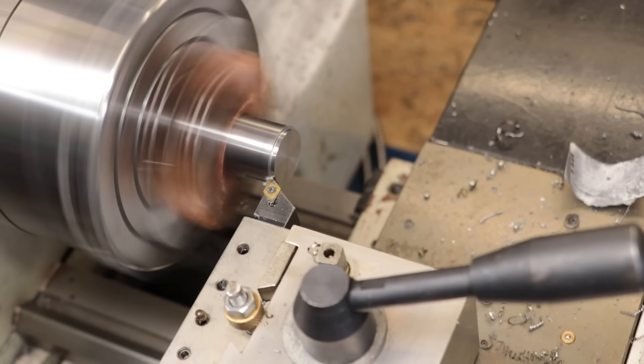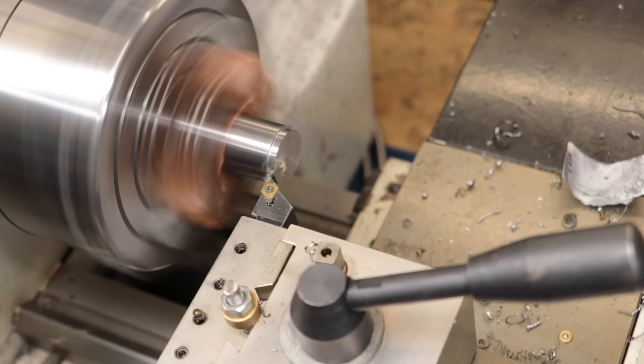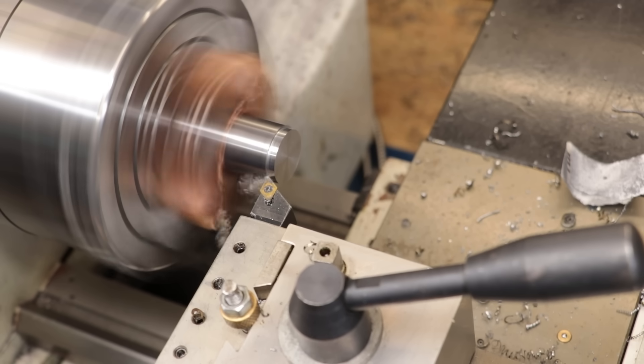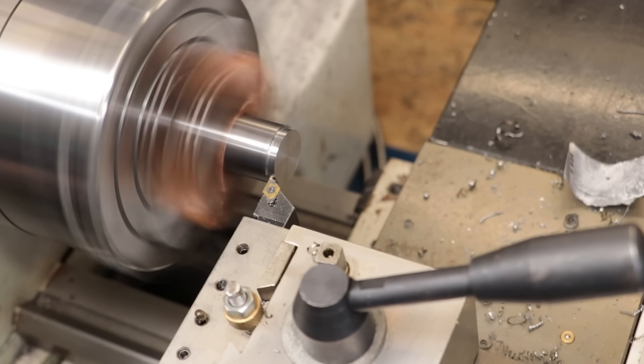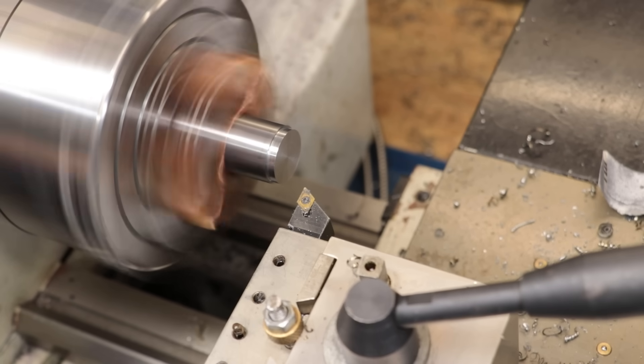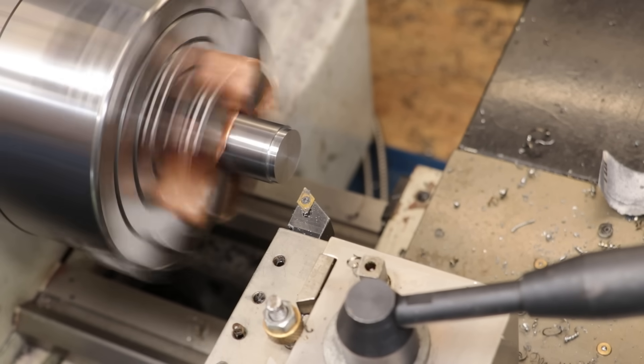For instance, I electroplated the quick change tool post and its tool holder because they were showing signs of wear. Ever since I did that, they've been holding up really well. There's been no signs of rust and the electroplating has held up quite well.